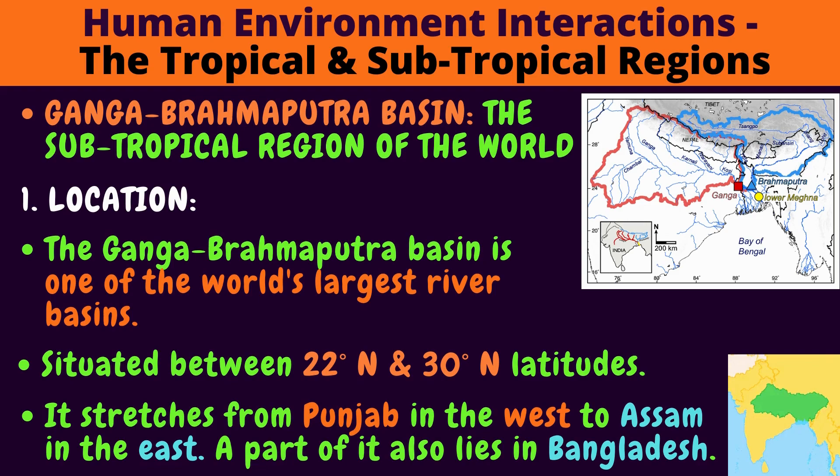All that area is showing the Ganga Brahmaputra Basin. The Ganga Brahmaputra Basin is one of the world's largest river basins. It is situated between 22 degrees north and 30 degrees north latitudes. It stretches from Punjab in the west to Assam in the east. A part of it also lies in Bangladesh.